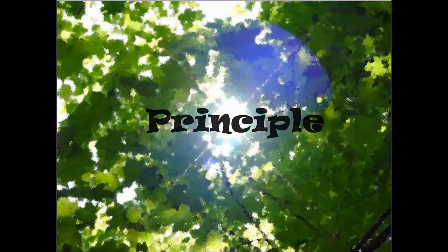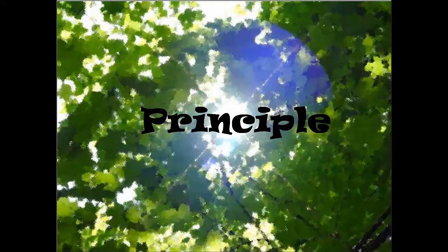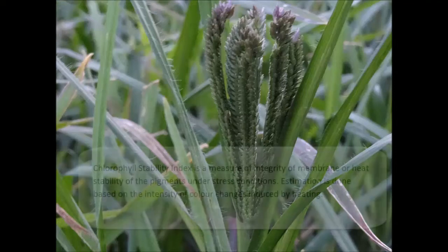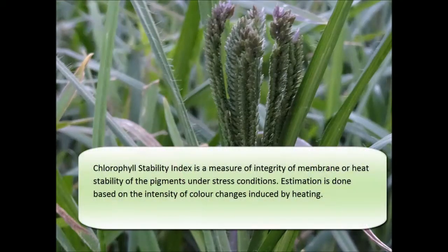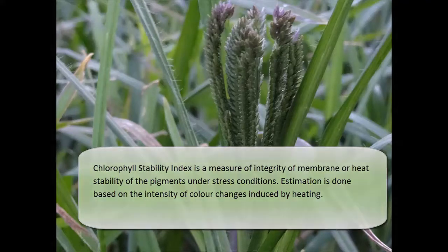The principle of chlorophyll stability index is that chlorophyll is thermosensitive and its degradation occurs when it is subjected to high temperatures. Estimation is done based on the intensity of colour changes induced by heating.